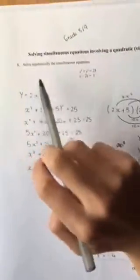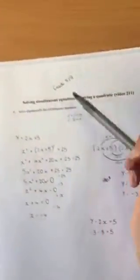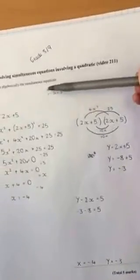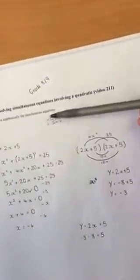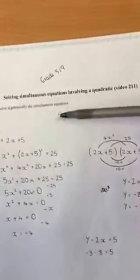So the question says, solve algebraically the simultaneous equation. The equation is x squared plus y squared equals 25 and y minus 2x equals 5.